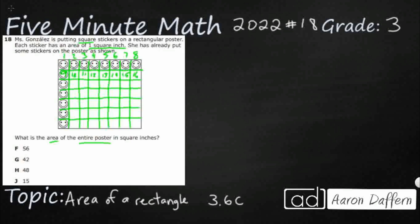Check out a slightly faster way. We know that area, if we look on our mathematics chart, equals L times W. We can see that we've got eight columns, and these are just groups of eight. So I could just do repeated addition — eight plus eight plus eight plus eight plus eight plus eight plus eight.